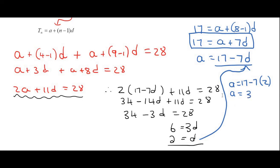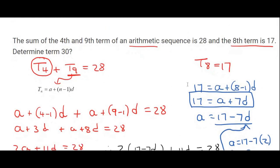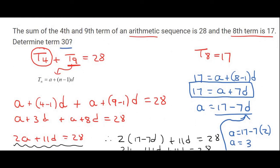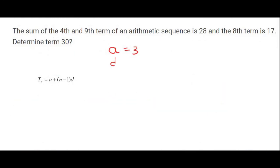So we now have A and we have D. However, this question says determine term 30. That's very easy now because to find term 30 we can just say A which is 3 plus 30 minus 1 times D which is 2. Go ahead, type this all in on the calculator, and you should get a final answer of 61.